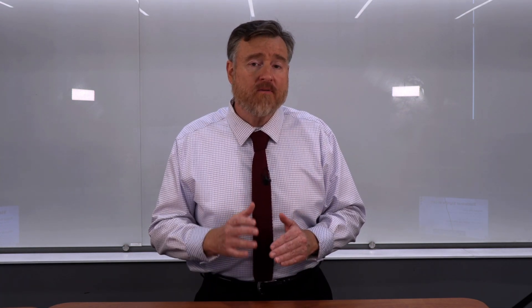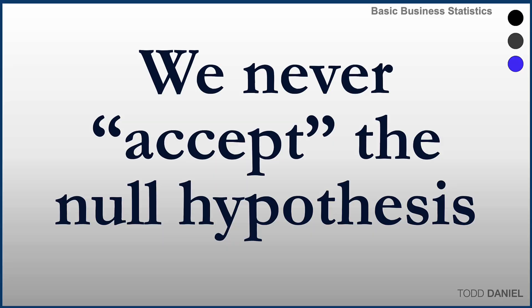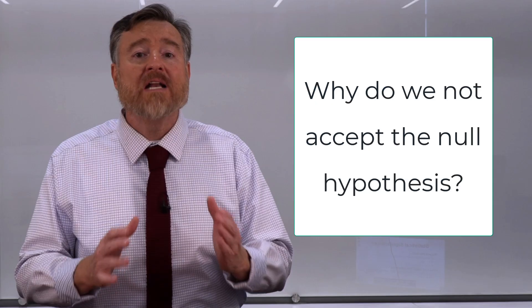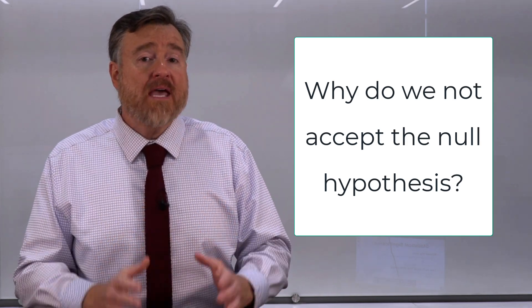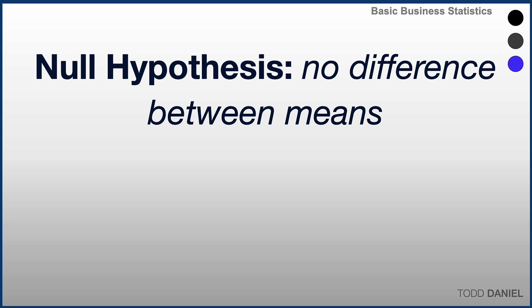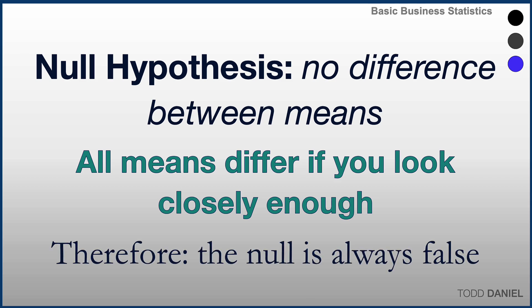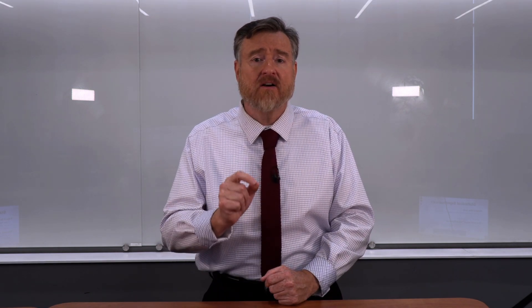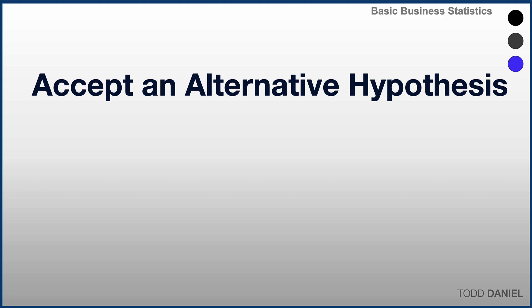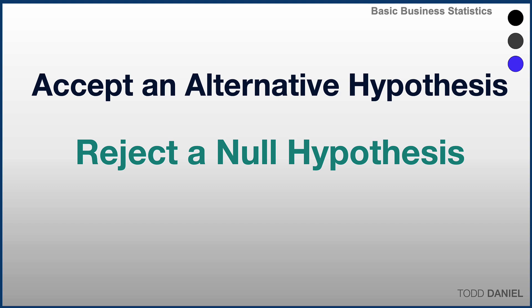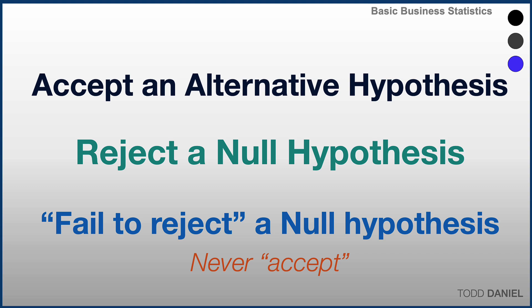It's important to stress something about the words we use to describe our decision-making. We will never accept a null hypothesis, although we may reject it. Why? Because the null hypothesis stipulates there is no difference between the sample mean and the population mean. However, any time you measure a sample mean it will be different than the population mean — if we go to enough decimal places there will be a difference. Therefore, we would never accept the hypothesis of no difference. We will accept an alternative hypothesis, we will reject a null hypothesis, or we will fail to reject a null hypothesis. Those are the options.